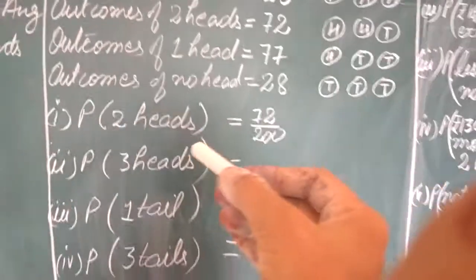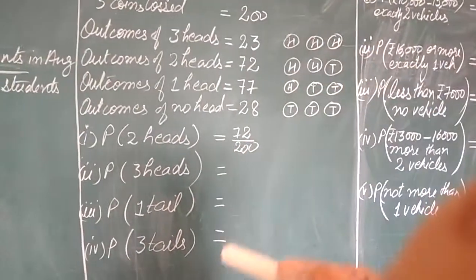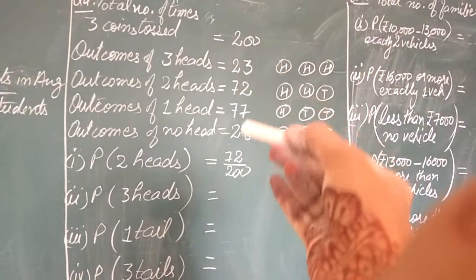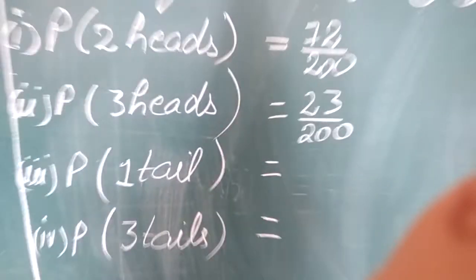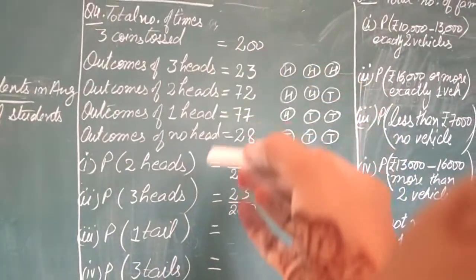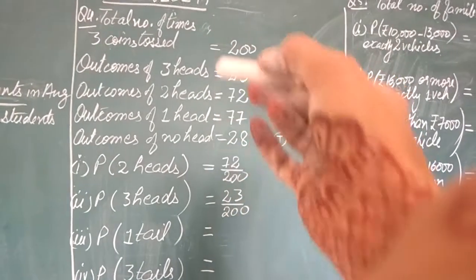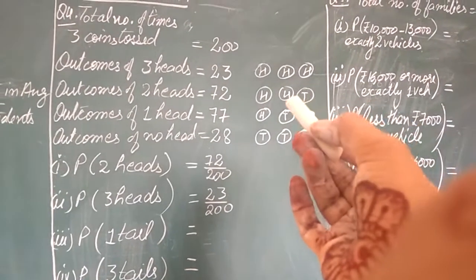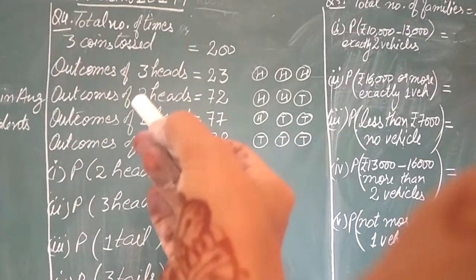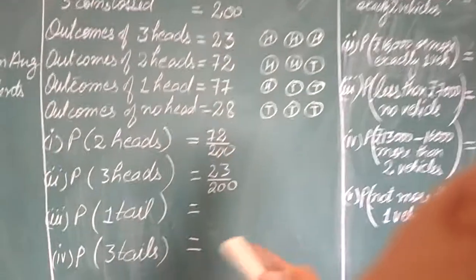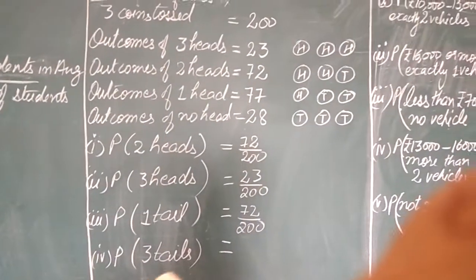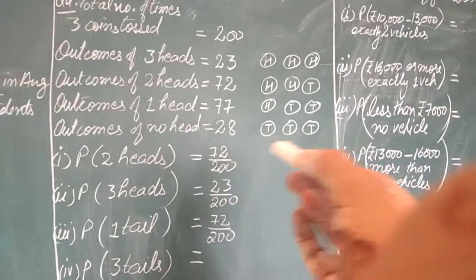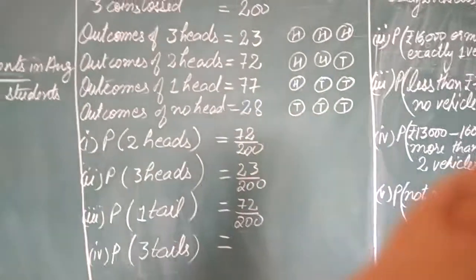Only the probability of 2 heads was asked in the question, but I am explaining a few more examples. Probability of 3 heads: the number of outcomes in favour of 3 heads is 23, so it is 23 divided by 200. Similarly, for 1 tail — head information is given, but we can derive tail information. 1 tail means 2 coins have 2 heads, so we use 72 divided by 200. Probability of getting 3 tails: 3 tails means no head, and that is 28 divided by 200.